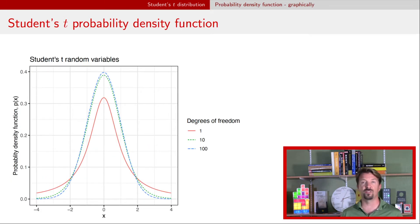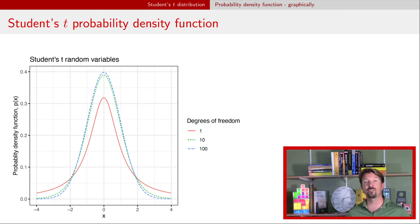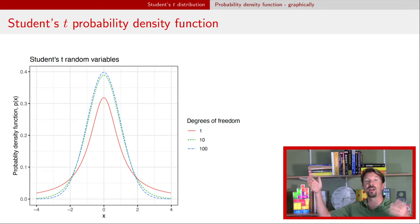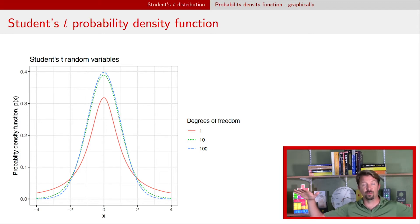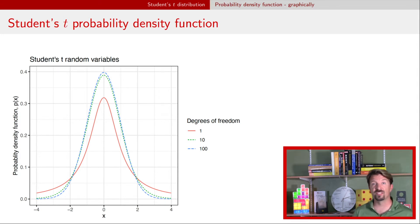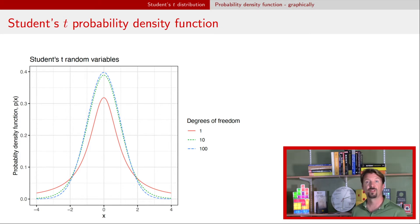Now let's take a look at some of the PDFs. I've given three values for the degrees of freedom: 1, 10, and 100. As the degrees of freedom get higher, you have a more peaked PDF at zero and the tails of the distribution get flatter. If you have lower degrees of freedom, you have fatter tails; if you have high degrees of freedom, those tails get pretty narrow or thin. All of these distributions are symmetric around zero, which comes from that x squared term in the PDF.